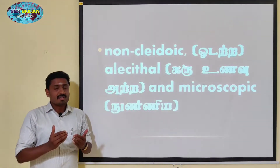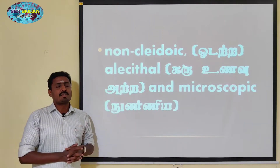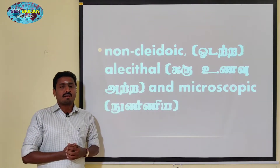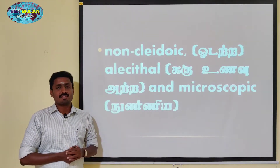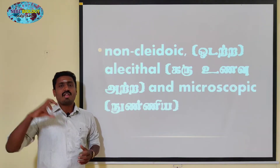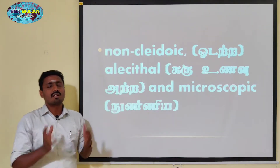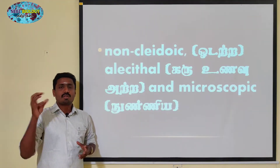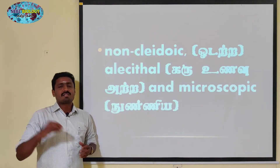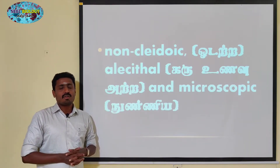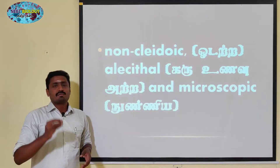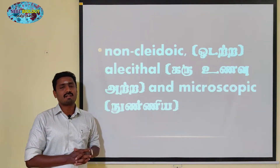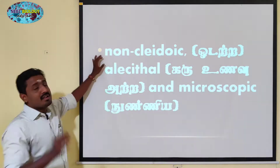We will talk about the structure of the animal cells before fertilization. First, we will talk about the egg structure before fertilization. After fertilization, the egg will be formed in the uterus as a cleidoic egg. The ovum of mammals is a non-cleidoic egg. The uterus is a structure of the mammals.